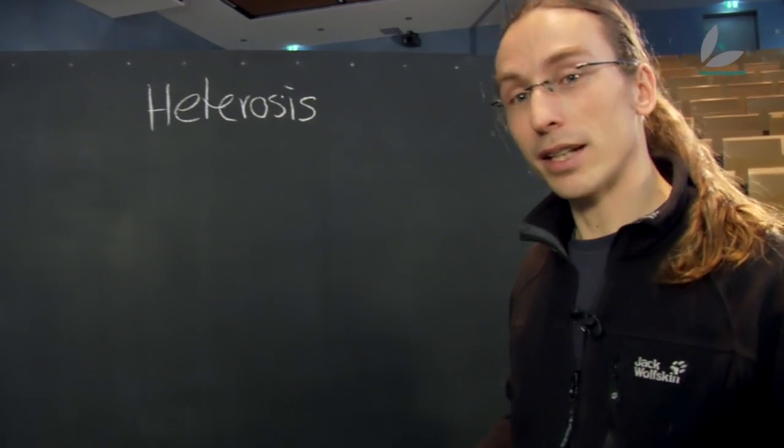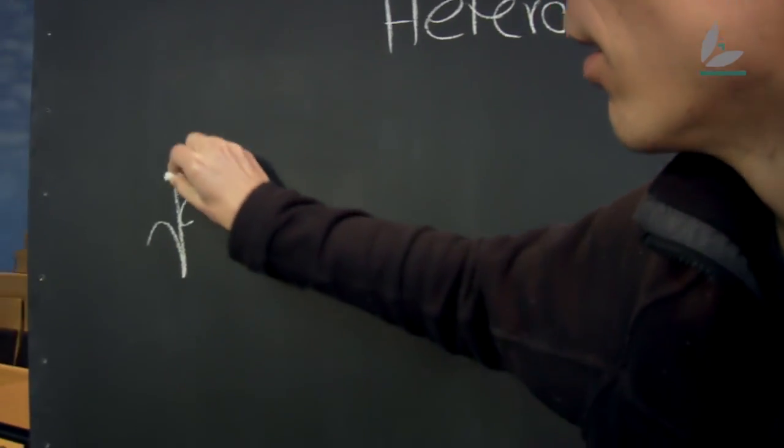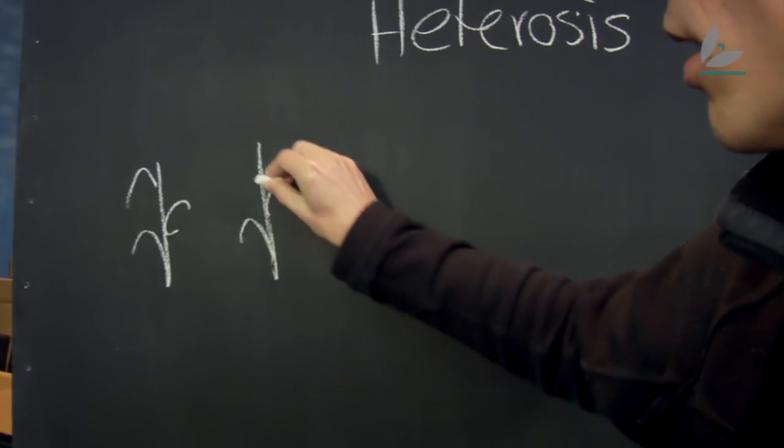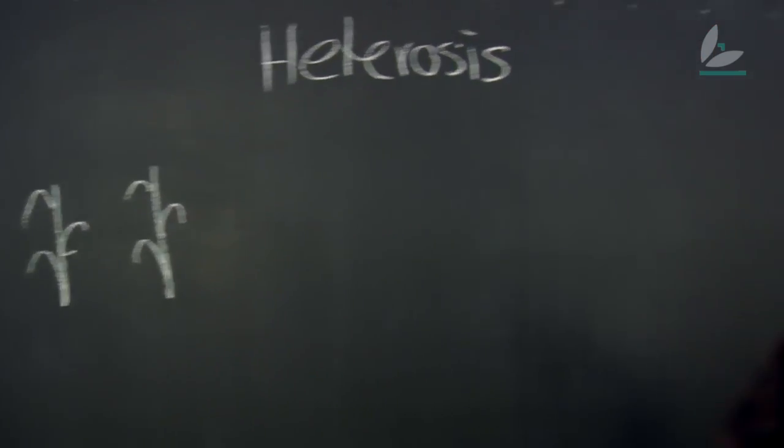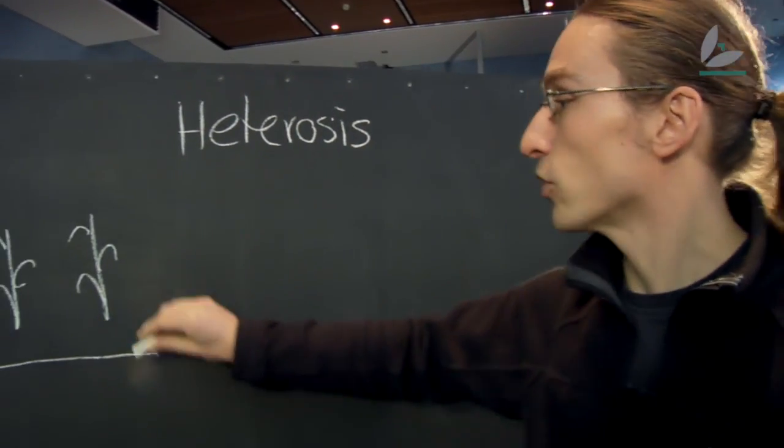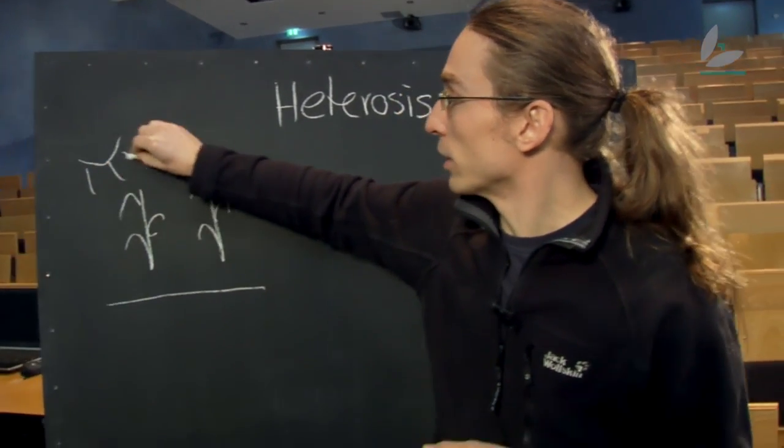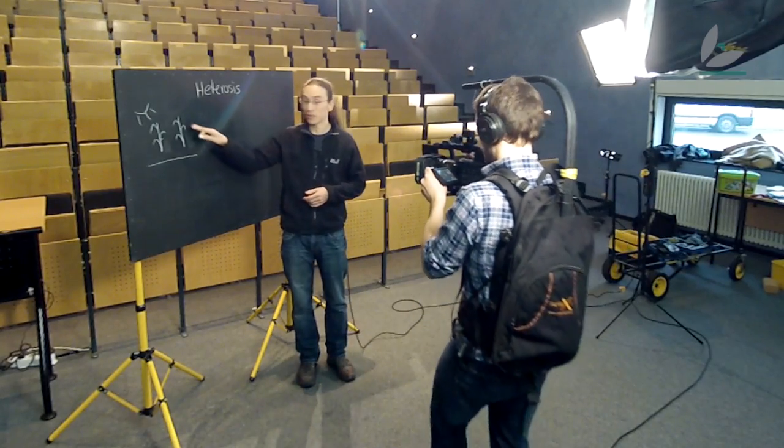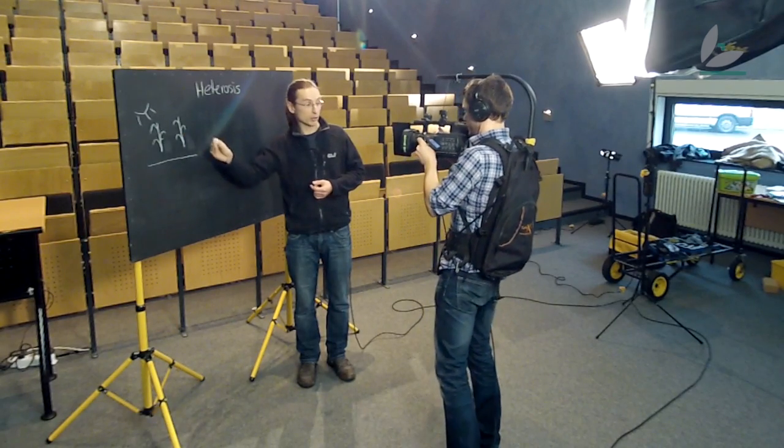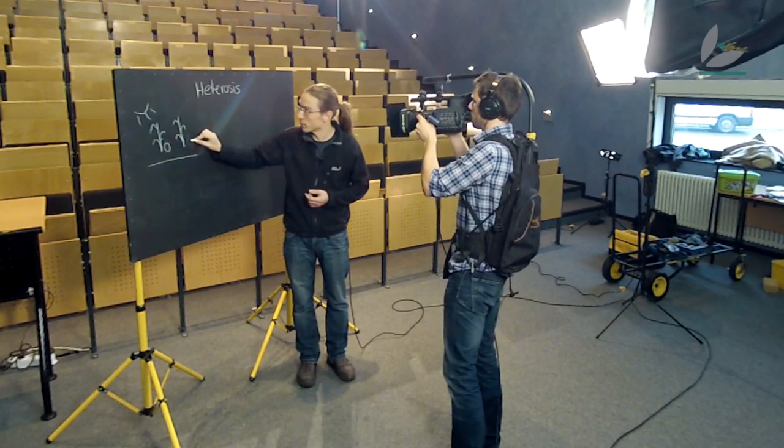Imagine you go outside and have a look at a field of corn. Then you will realize that most of the plants are quite similar in height, which is not surprising as they grow on the same soil and share the same environmental conditions. Moreover, they mostly belong to the same line of corns, so they share most of the genes and therefore have quite similar yield.